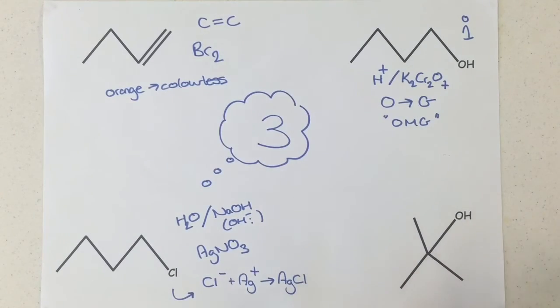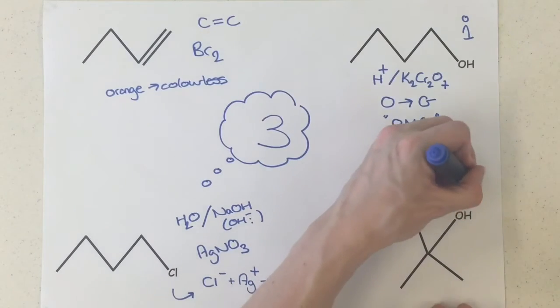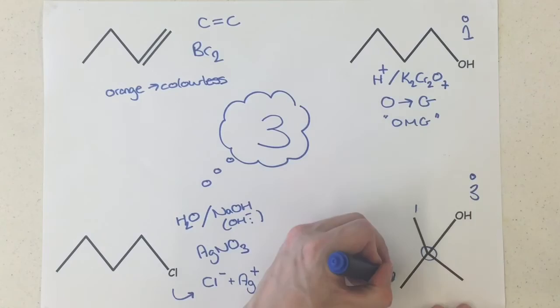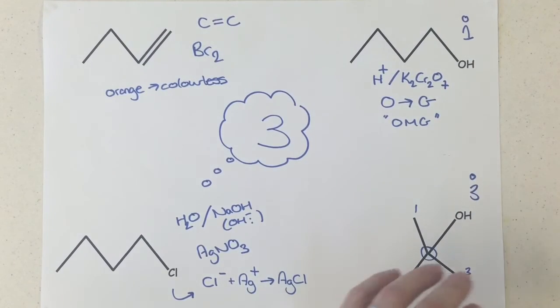Down here, there isn't a test for this one. Unlike the primary alcohol, this is a tertiary alcohol. The carbon bonded to the OH is bonded to 1, 2, 3 other carbons, making it tertiary. This won't react with acidified potassium dichromate, bromine water, or NaOH with AgNO3. But that's the point - if the other three do and this won't.